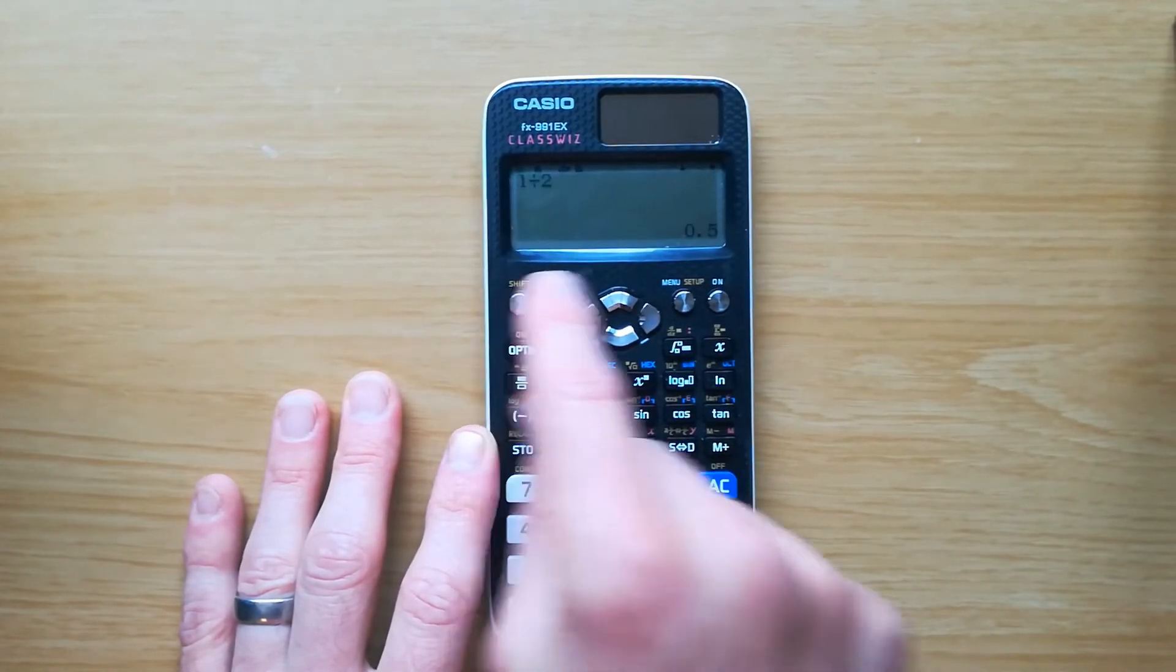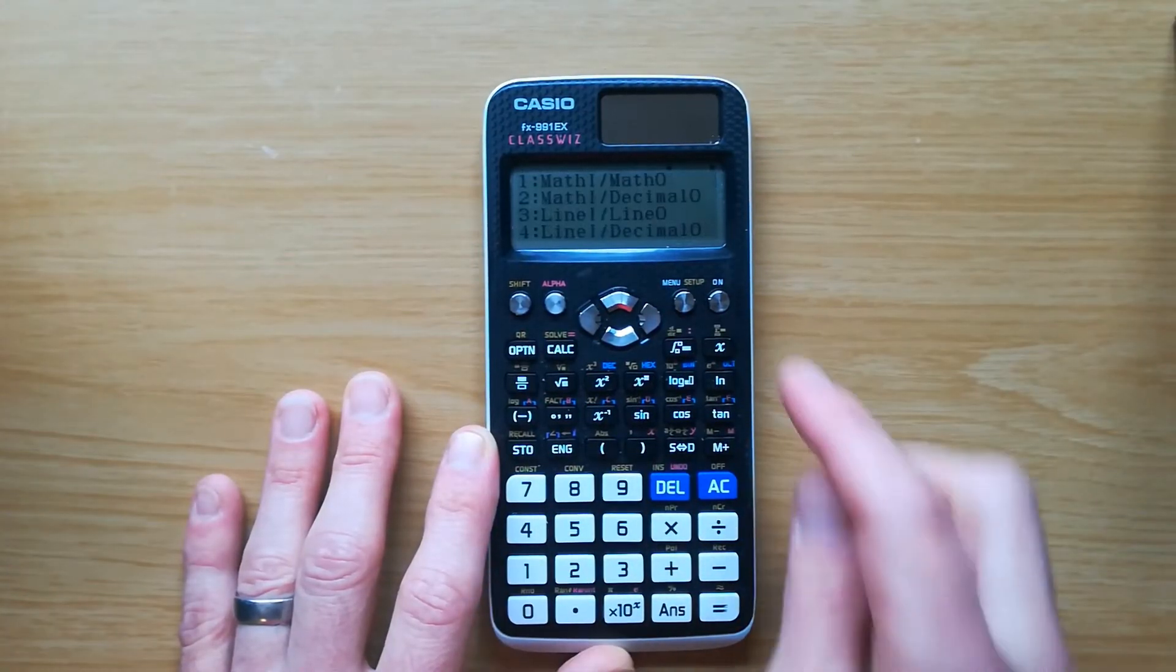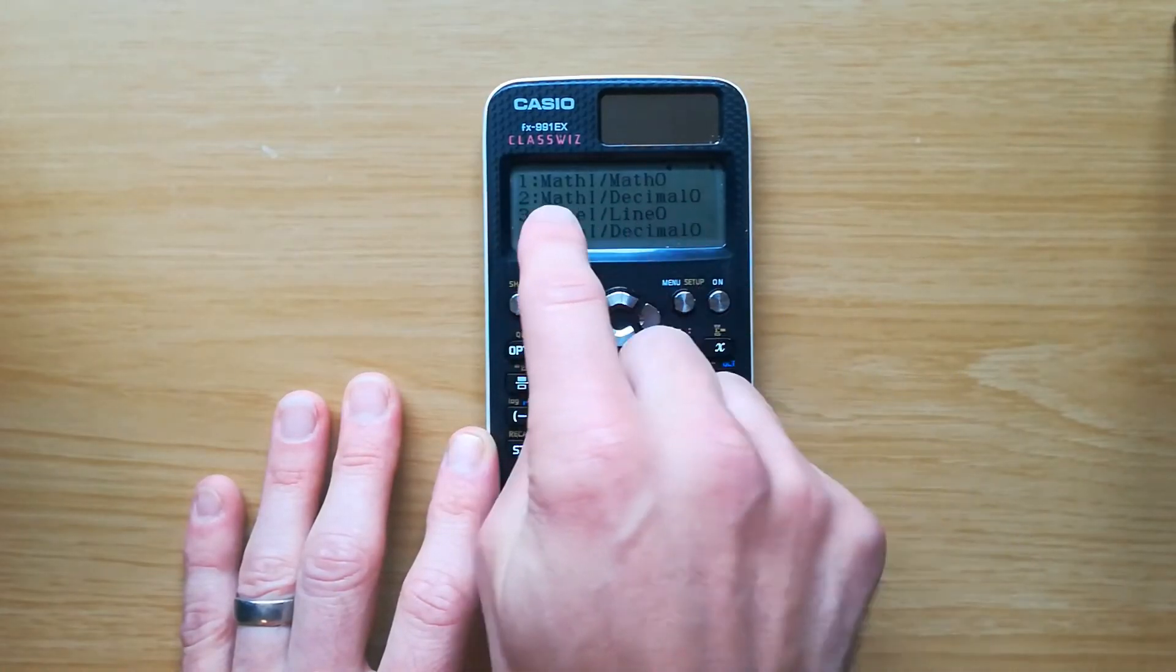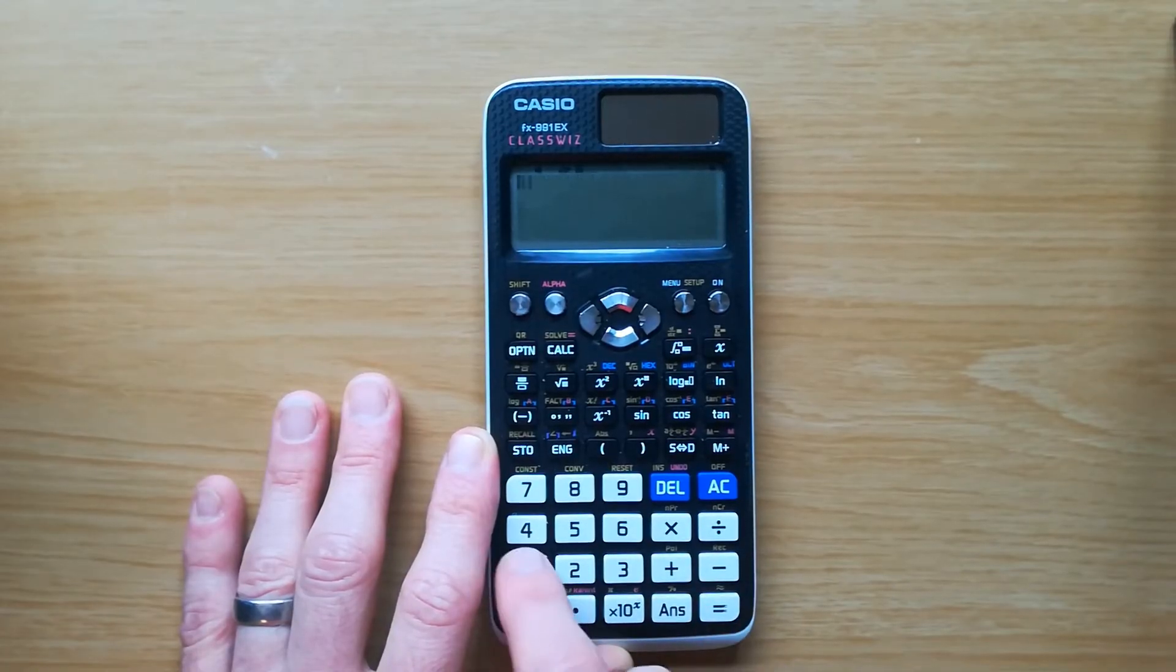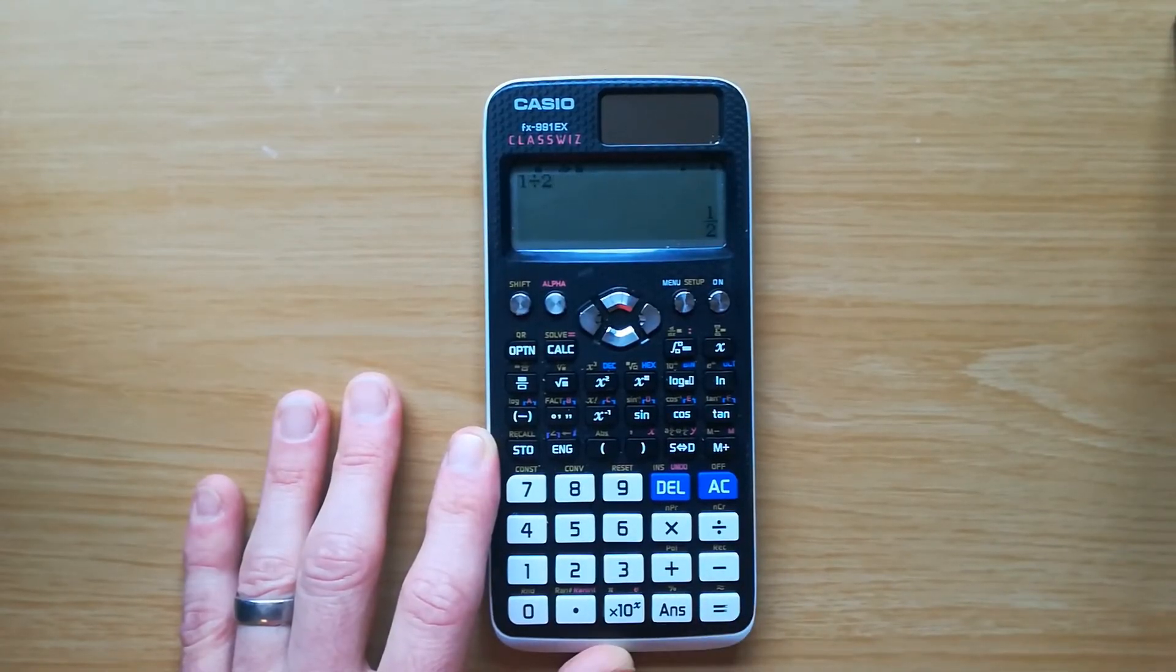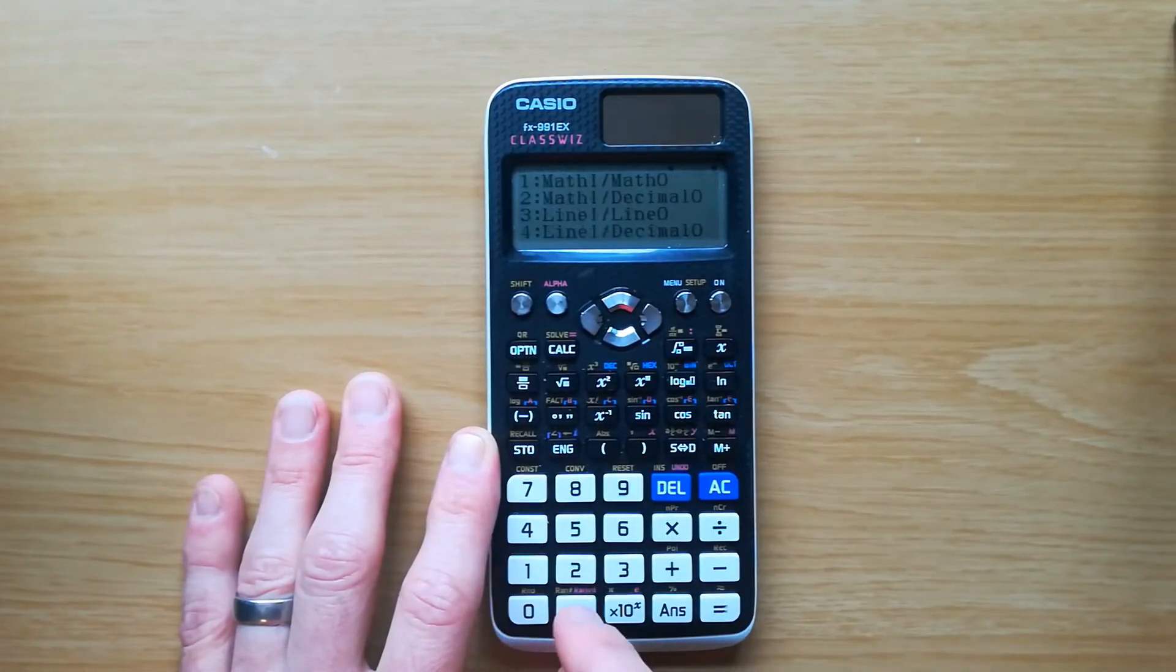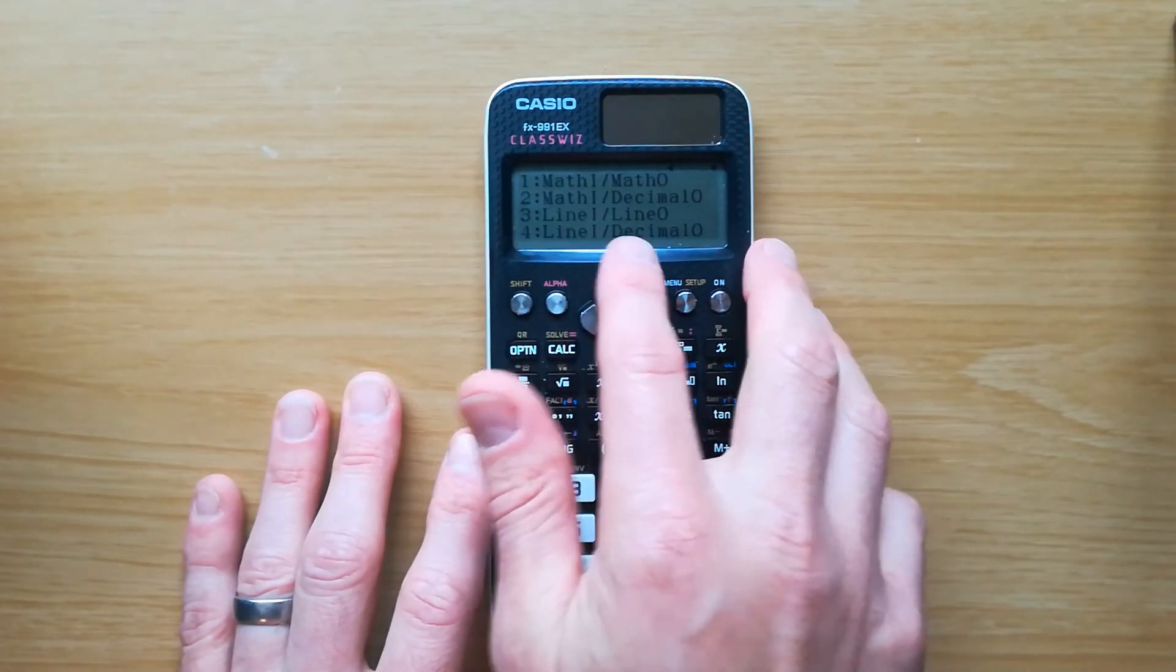Now you might have seen, we'll go back to the setup and the input output, that there's a few other options. So the first option is the default, that's what we had at the beginning, that's where your answer will be as a fraction. And we saw that the second option was showing it as a decimal.